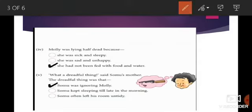Number four: Molly was lying half dead because she was sick and sleepy, she was sad and unhappy, or she had not been fed with food and water. The correct option is she had not been fed with food and water because Somo had not given her food and water. Next: What a dreadful thing said Somo's mother. The dreadful thing was that Somo was ignoring Molly, or Somo kept sleeping till late in the morning, or Somo often left his room untidy. Yes, the right option is Somo was ignoring Molly.